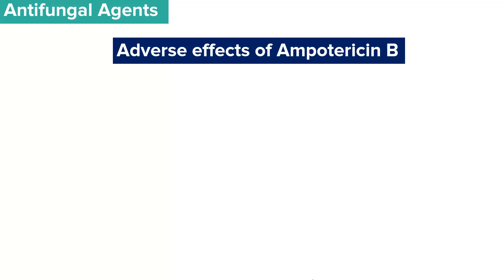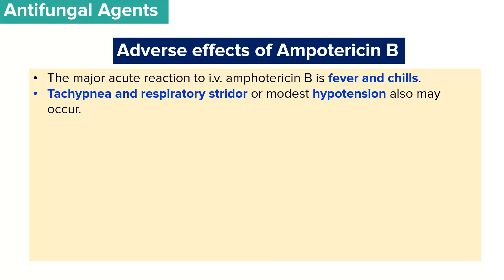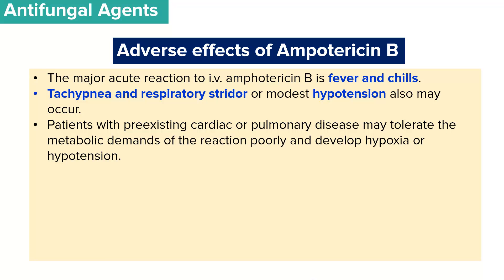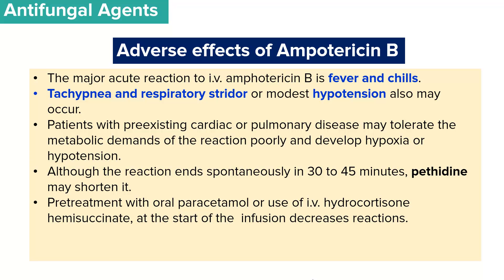The most common side effects that most patients experience are fever and chills. Tachypnea, respiratory distress, or some modest hypertension may also be reported in patients who receive amphotericin B infusion. Patients with pre-existing cardiac or pulmonary disease may tolerate the metabolic demands of this reaction poorly and develop hypoxia or hypertension. Although this reaction ends spontaneously in about 30 to 45 minutes, pethidine can be employed to shorten this reaction. Pre-treatment with oral paracetamol or intravenous hydrocortisone at the start of the infusion can decrease the incidence of these side effects.